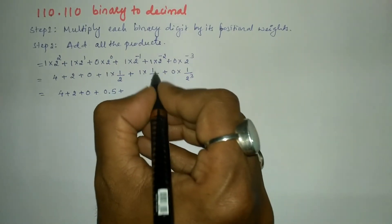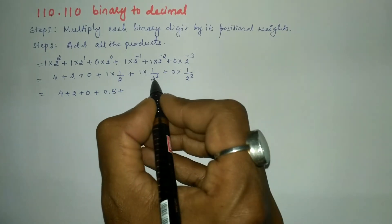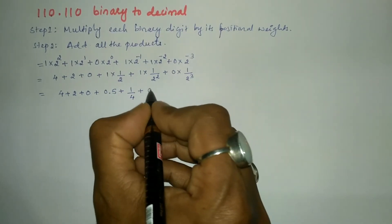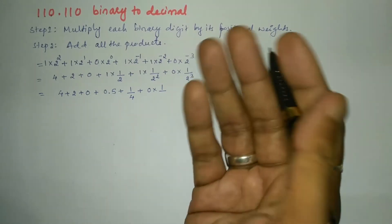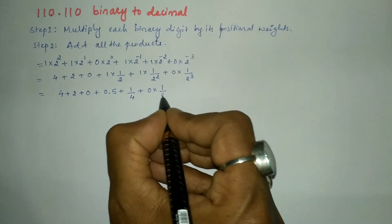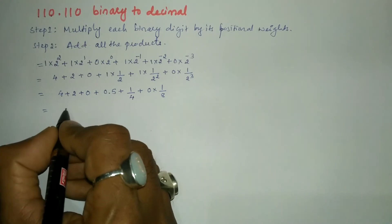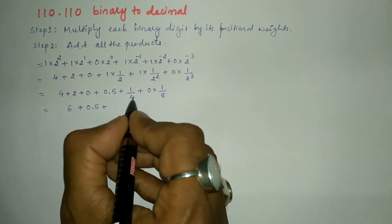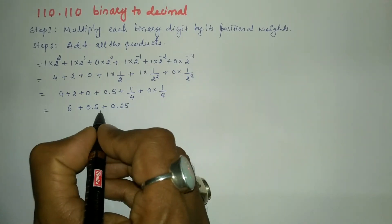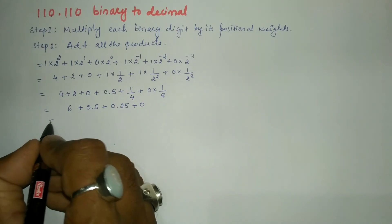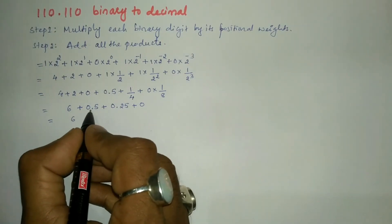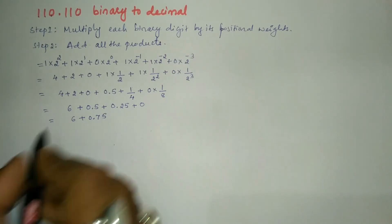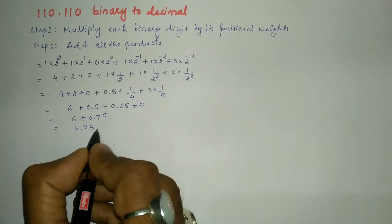Next, plus 1 into 1 divided by 2 to the power 2, that is 4, so we write 1 divided by 4, which is 0.25. Plus 0 into 1 divided by 2 to the power 3 — two multiplied three times gives 8 — so 1 divided by 8, but 0 into anything becomes 0. Further simplifying: 4 plus 2 is 6, plus 0.5 plus 0.25 gives 0.75, so adding all together we get 6.75 to the base 10.